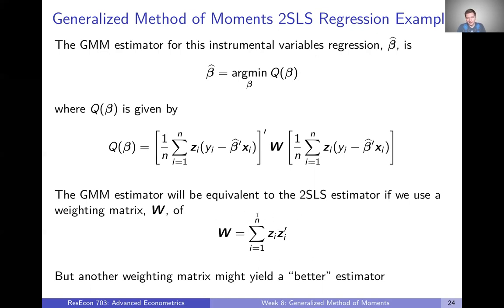In this case, it turns out if what we plugged in for W was this sum of squared instrument, like the data, then what we end up with is that our GMM estimator here is actually equal to the two-stage least squares estimator. So for that one particular choice of weighting matrix, our GMM estimator is the two-stage least squares estimator.